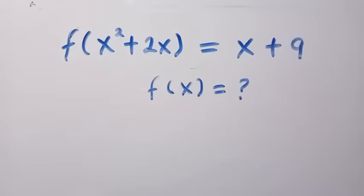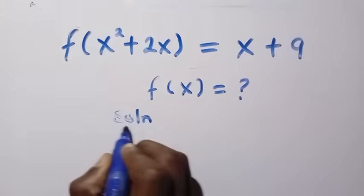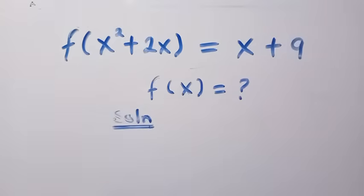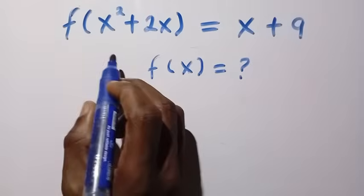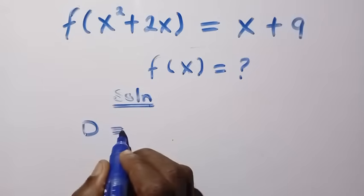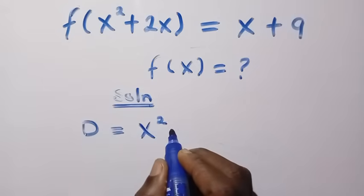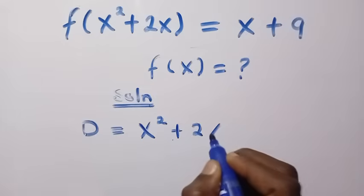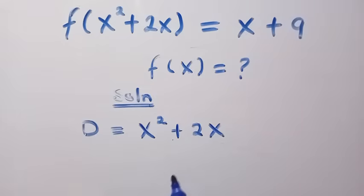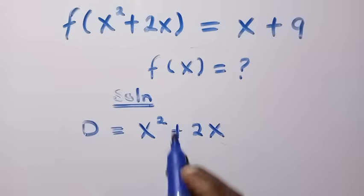This is very easy to solve when you consider the solution fixed. From this domain — let's call it D — we have D equals x squared plus 2x, and we are trying to make the entire domain become x.